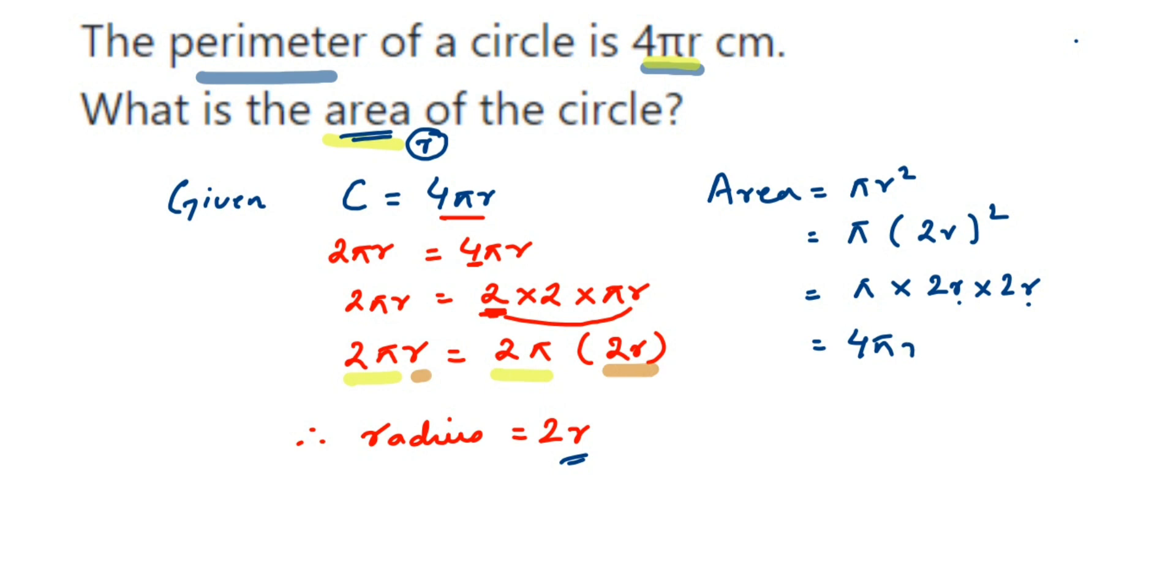And the unit will be centimeter square. So area is 4πr² and that's it. This is an interesting question. I hope it's clear. In case you have any other question or doubt you can drop a comment. Thank you so much for watching.